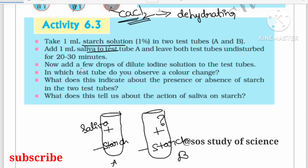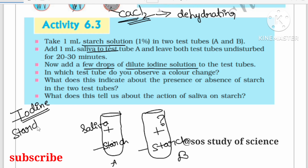After 20 to 30 minutes, add a few drops of dilute iodine solution to both test tubes. We use iodine solution to check the presence of starch. In the first case (test tube A), we have starch with saliva; in the second case (test tube B), we have only starch. Add iodine to both and observe.